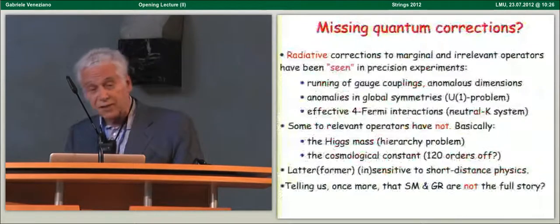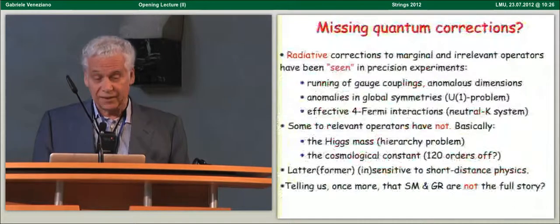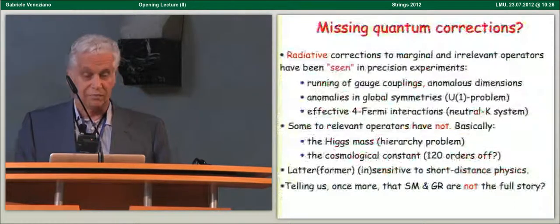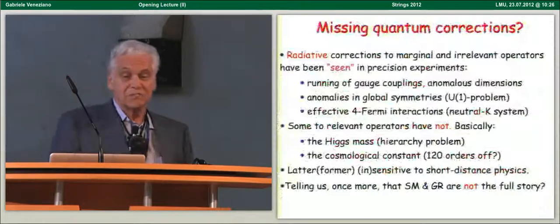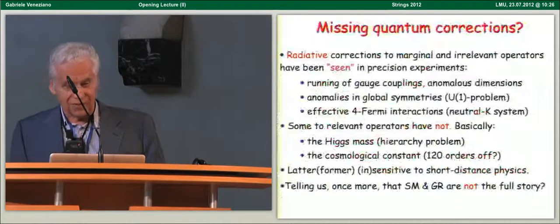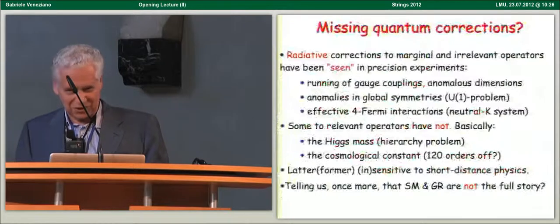Now, however, some relevant, the corrections to some relevant operators have not been seen, and I refer here simply to the Higgs mass, which should get a big radiative correction, cosmological constant, which may be even 120 orders off.